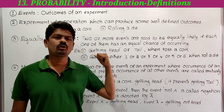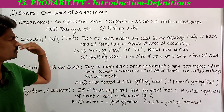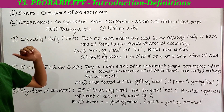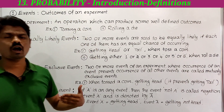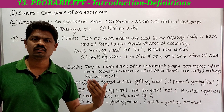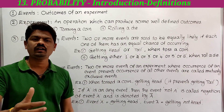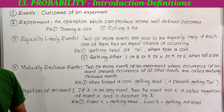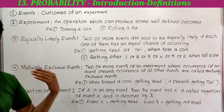Now we have to learn the definitions of the terms before going to solve the problems. First, events — outcomes of an experiment are known as events. For example, suppose if I toss a coin, the outcomes are getting head or getting tail. These two outcomes are called events.